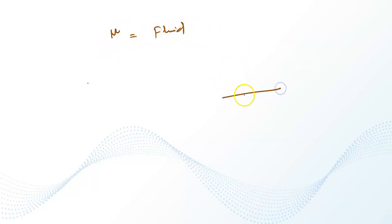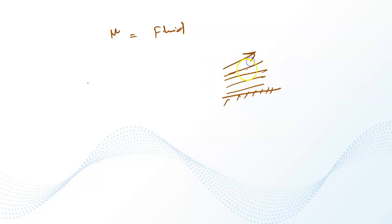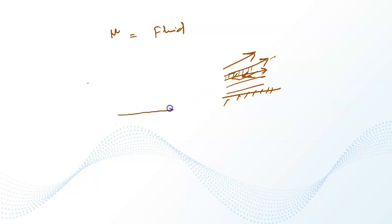Consider a fluid placed on a stationary surface. If this fluid is pushed from the top side, the upper layers will try to move in that direction, and each layer will try to move the layer next to it. However, the next layer will oppose this movement and produce a resistance.